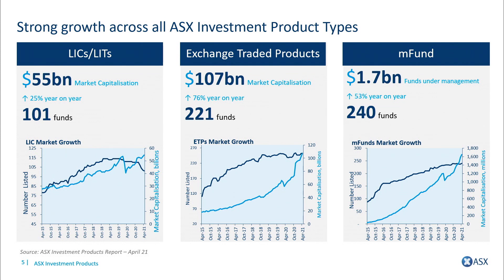As for M-Fund, the newest product available on the ASX has been running for about six years now. We have reached $1.7 billion in funds under management, and that continues to go from strength to strength every year. There are now 240 funds on the service, very quickly getting towards 250, with strong growth of over 50% year on year in M-Fund.